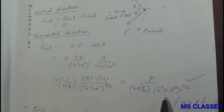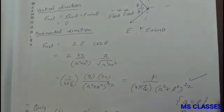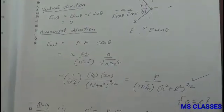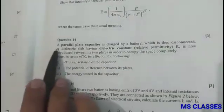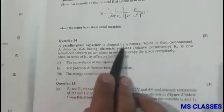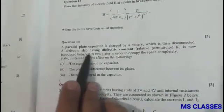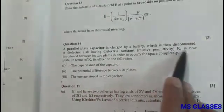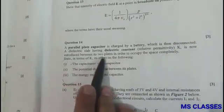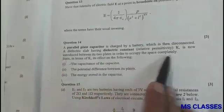Question 14: A parallel plate capacitor is charged by a battery which is then disconnected. A dielectric slab having dielectric constant K is now introduced between its two plates in order to occupy the space completely.